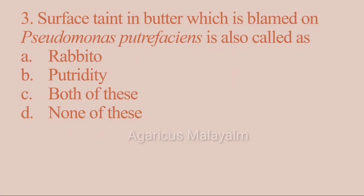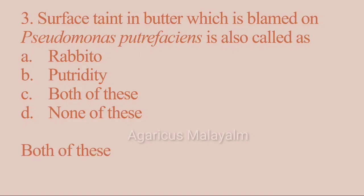Third question: surface tenting butter, which is blamed on Pseudomonas putrefaciens, is also called as? Option A: rancidity. Option B: putridity. Option C: both of these. Option D: none of these. Correct answer: Option C — both of these.